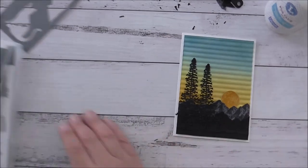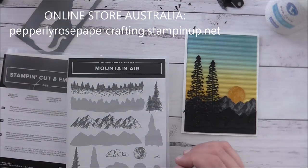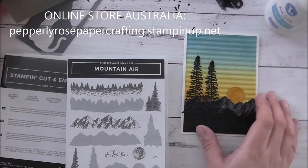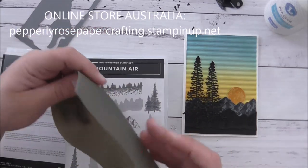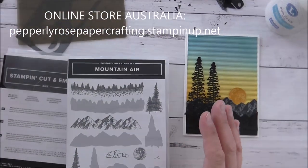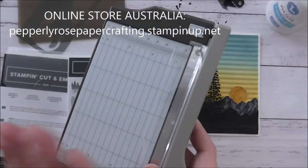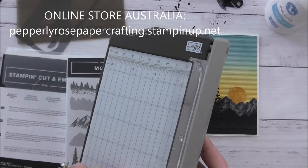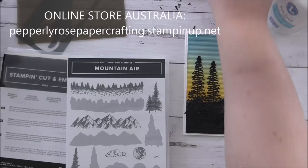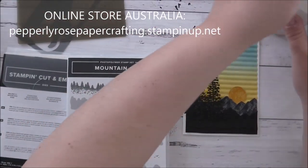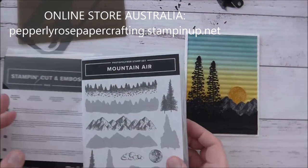I hope you enjoyed today's tutorial. All of these items—the mountain air bundle—you can purchase from my online store at pepperlyrosepapercrafting.stampinup.net. You can also purchase the craft sheet, the silicon craft sheet, the cardstock, this guillotine. If you are thinking of joining Stampin' Up, you'll receive this up until the end of March in your starter kit. This is really handy, as you saw, to trim small pieces of cardstock quite easily without having a large trimmer there.